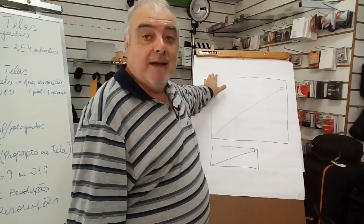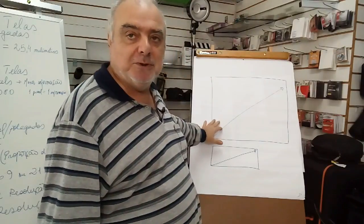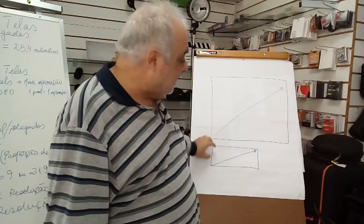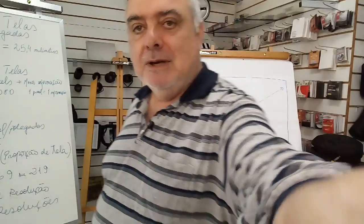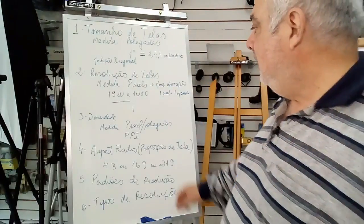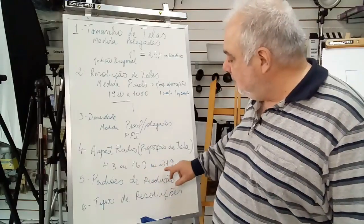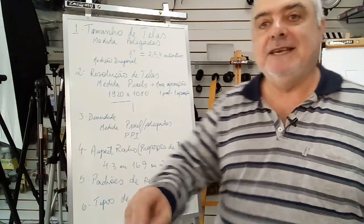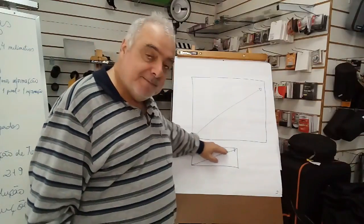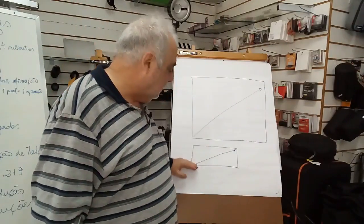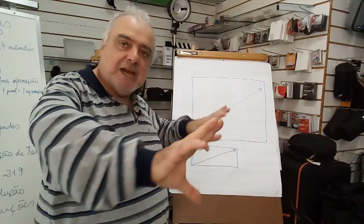Se aqui eu tiver 40 centímetros, eu vou ter 40 centímetros divididos por três aqui. Neste caso aqui, ela é uma outra relação — uma relação de 16 por 9 ou de 21 por 9. O que significa que eu terei aqui então 16 partes por 9. Vocês vejam que ela é muito mais retangular, muito mais despichada.